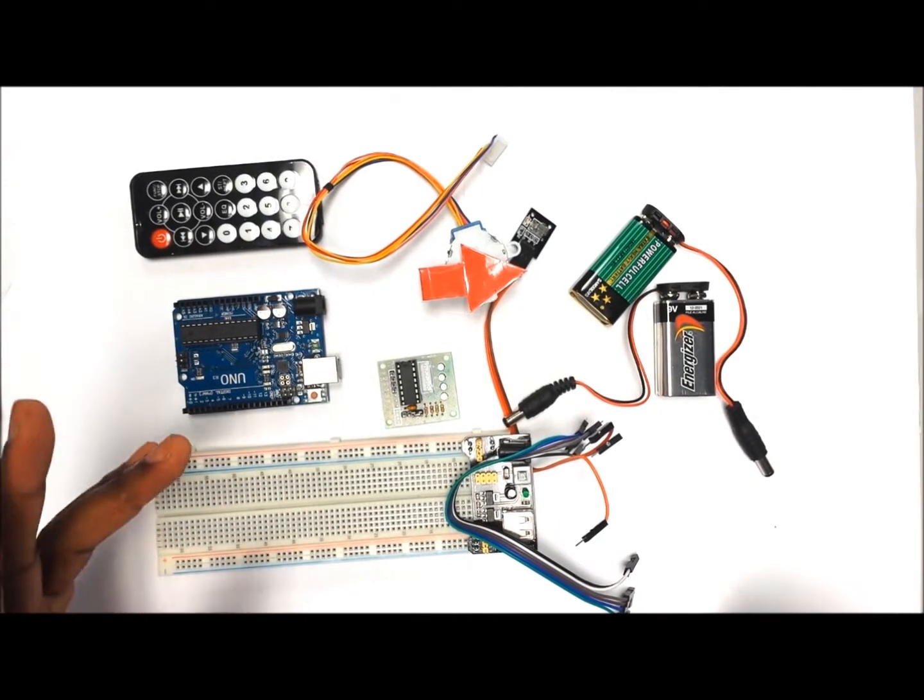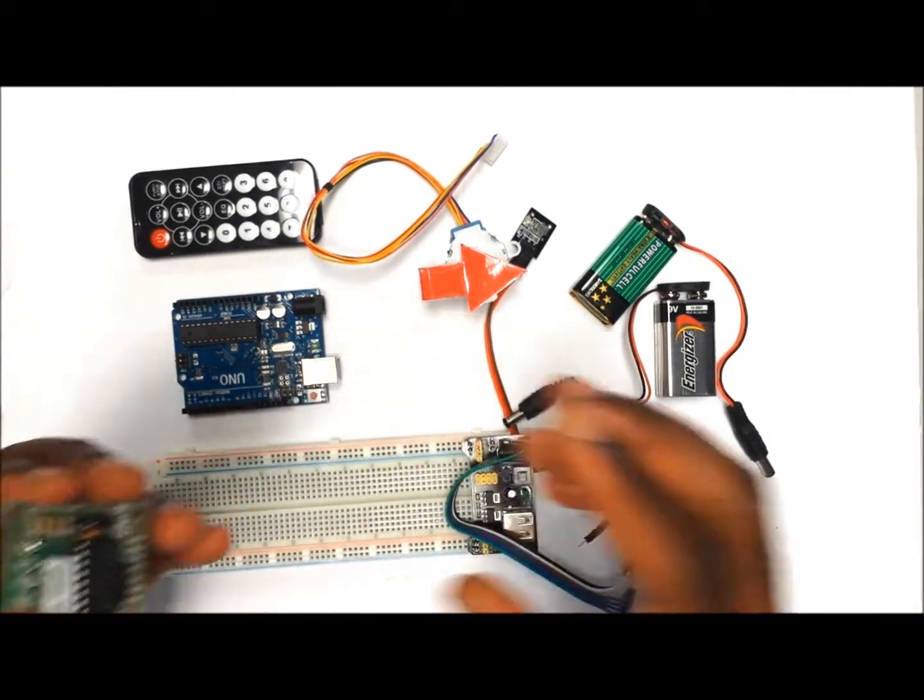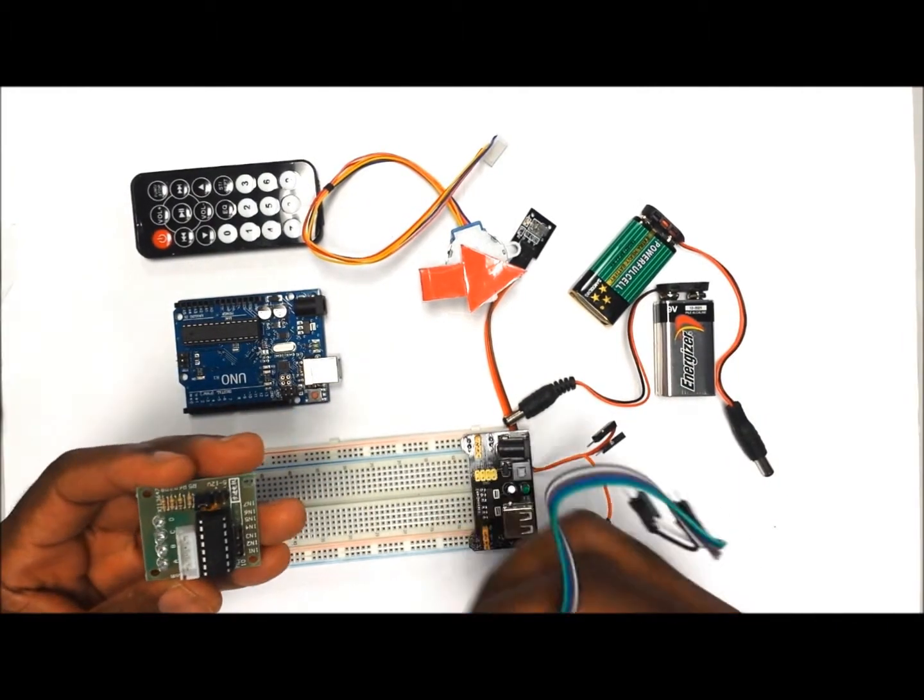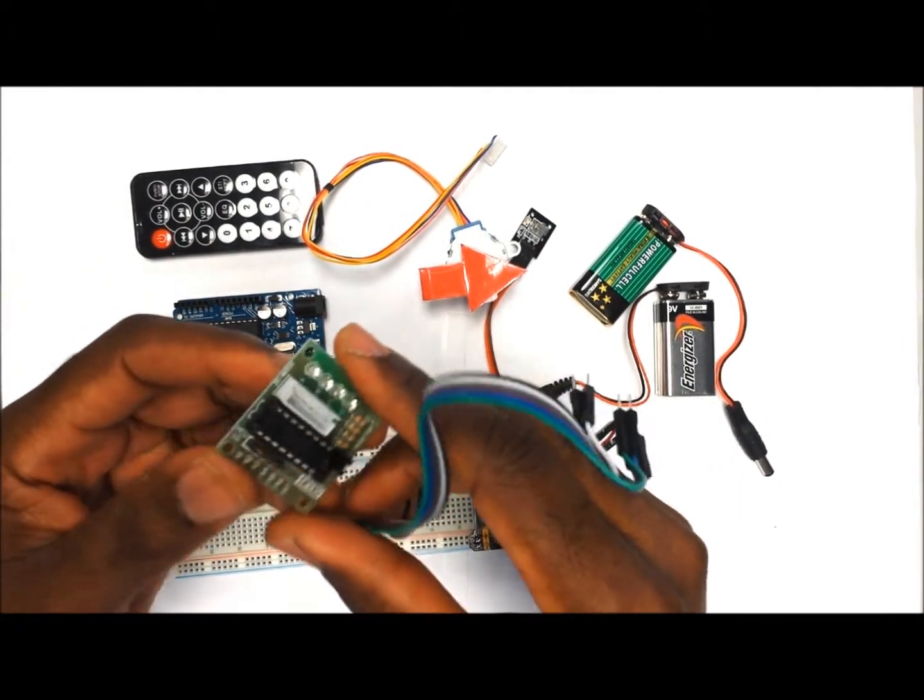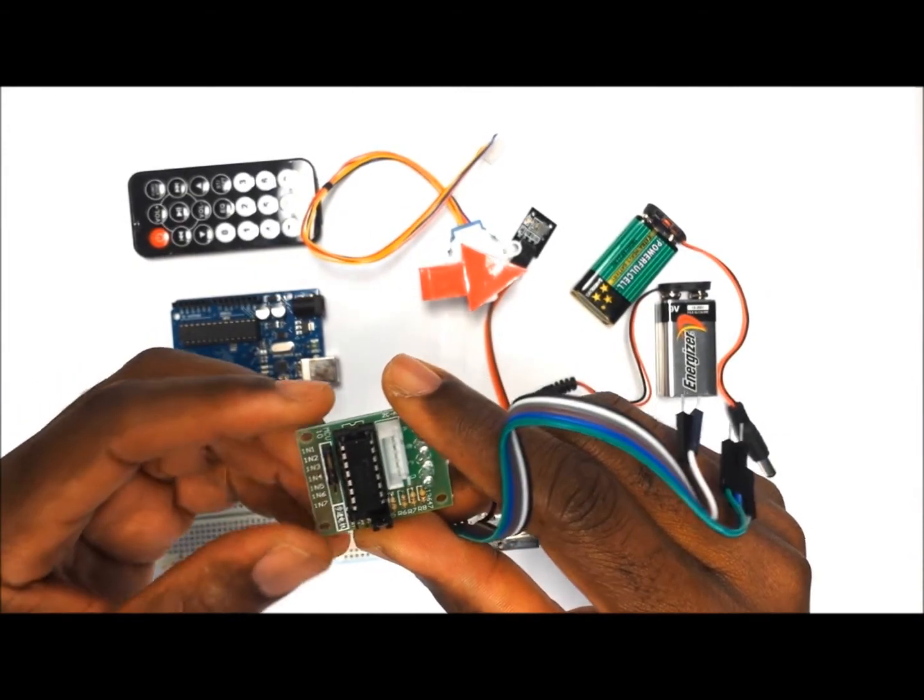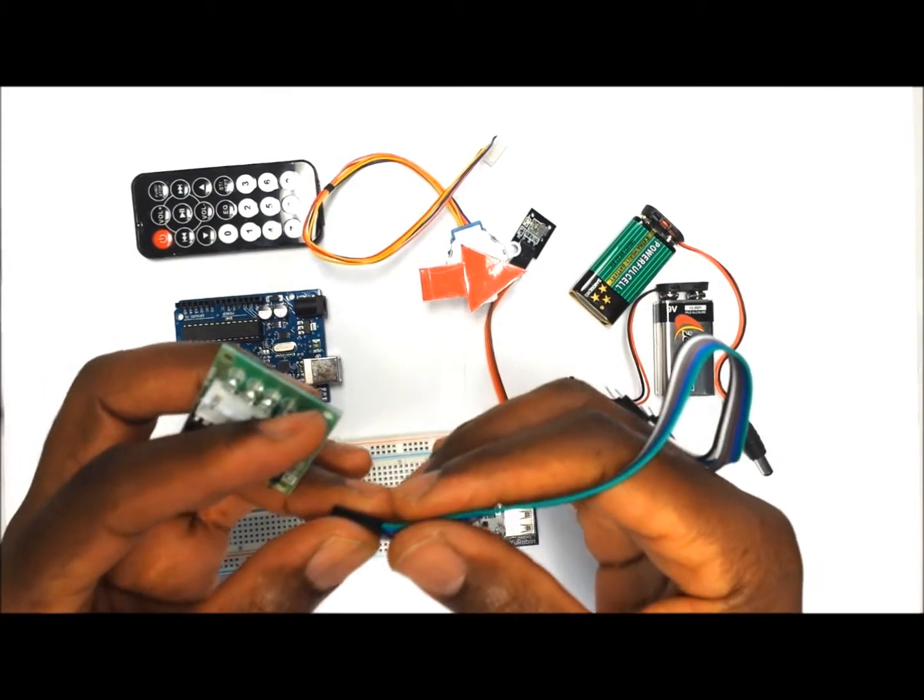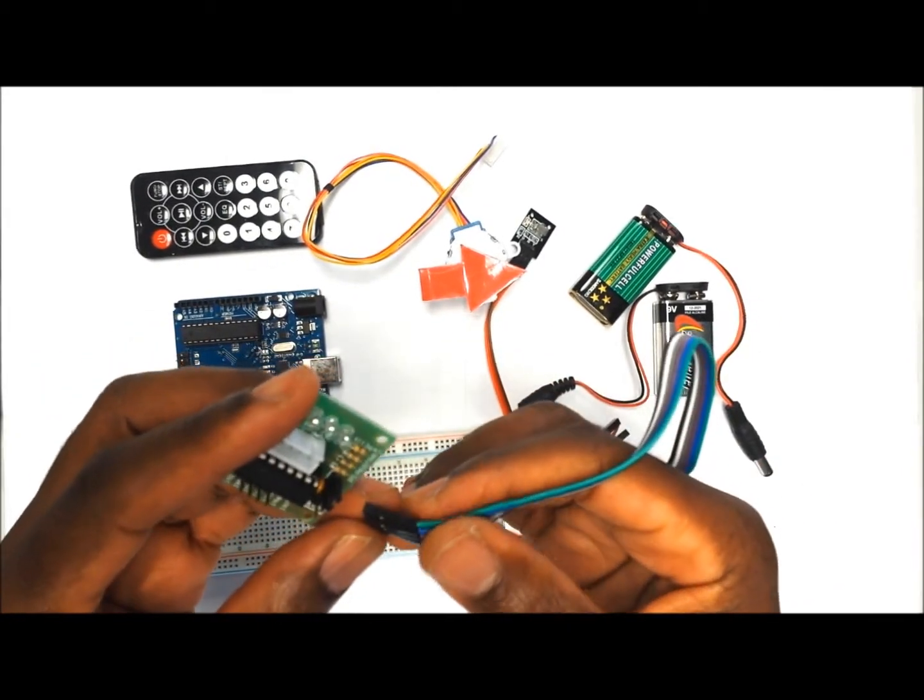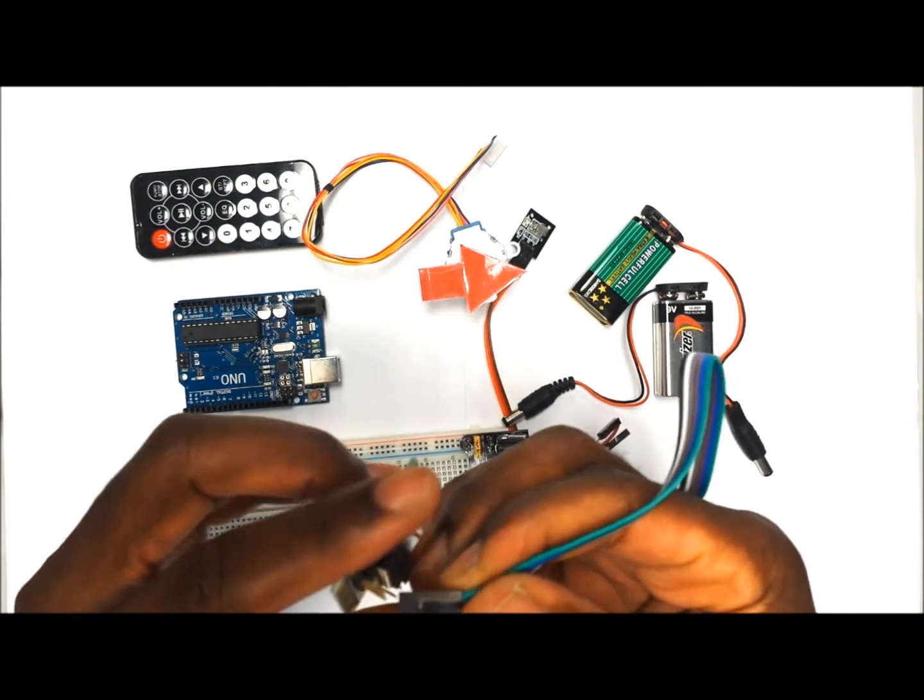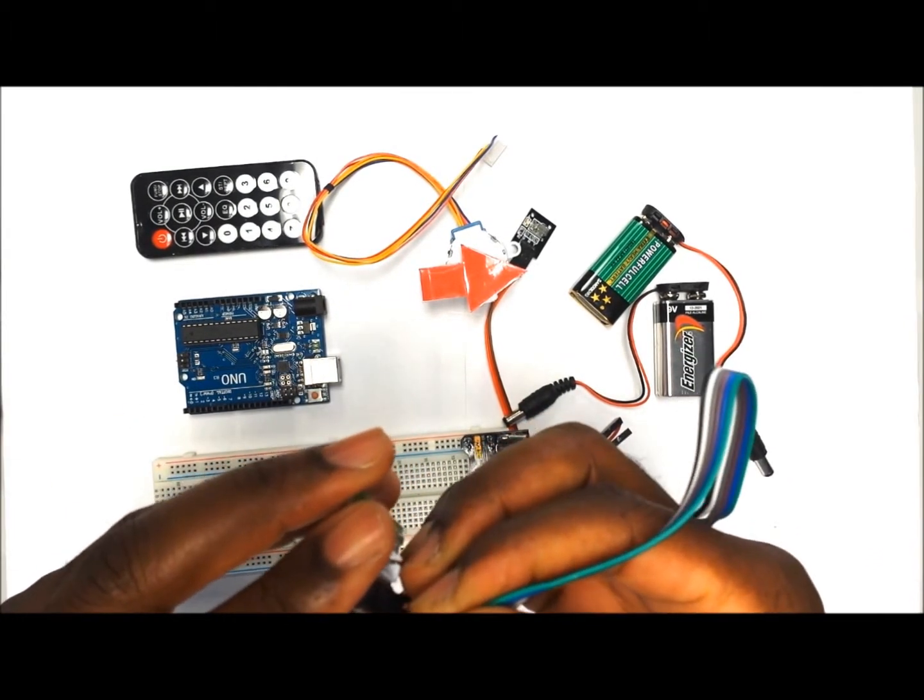So to start our project, we're going to do our wiring. We're going to start by wiring the driver for the stepper motor. If you look closely, you will see that it has four pins on the side which are IN1, IN2, IN3, and IN4, which are going to be used to control the direction and speed of the stepper motor. So we're going to put four jumper wires there that are going to be routed to the Arduino, like so.